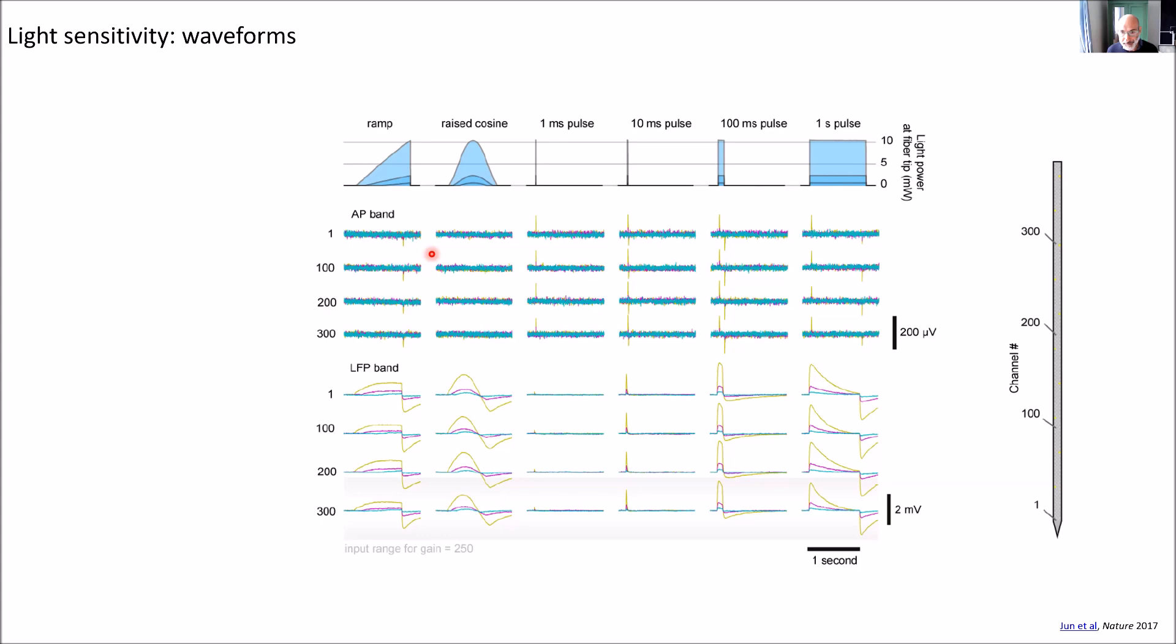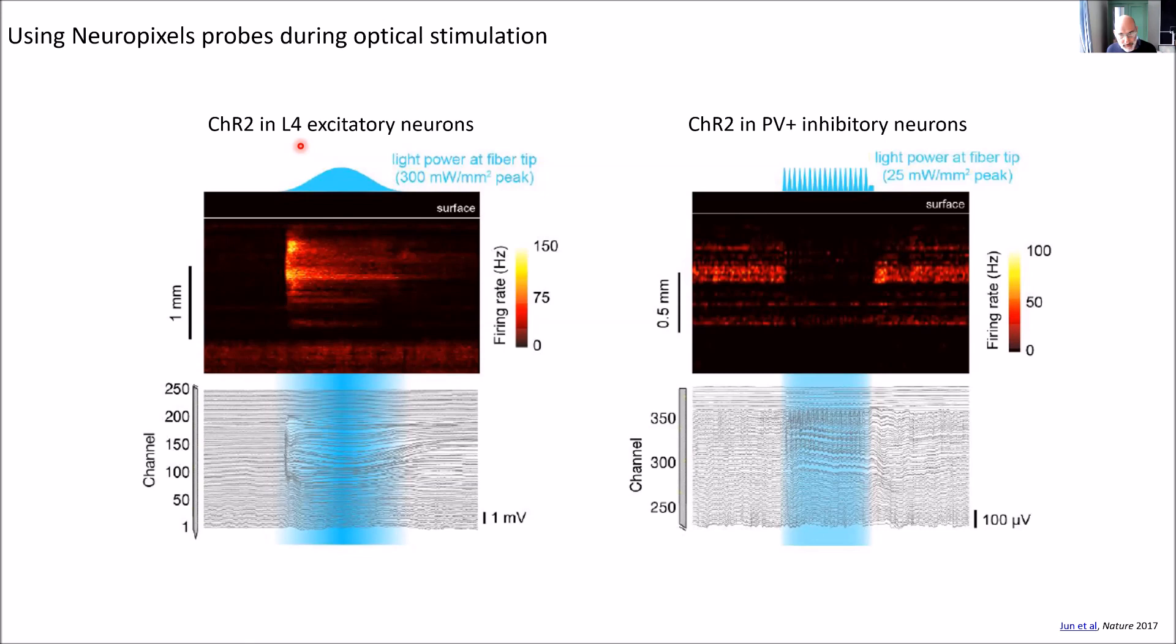Let me show you two examples of optogenetics during recordings. One is an example in which we had channelrhodopsin in mostly layer four excitatory neurons, and we used some kind of Gaussian or raised cosine light waveform. In layer four, you get a lot of spikes. The good news is that the LFP is mostly happening in this region where you get spikes. This is an example in which we used rapidly oscillating light to drive parvalbumin positive inhibitory neurons, which of course has the effect of shutting down the cortex, as you can see here, and creates this LFP at the frequency of the light stimulation.